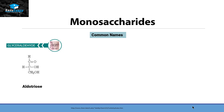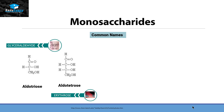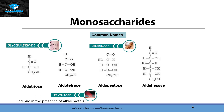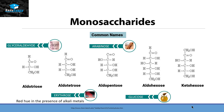Glyceraldehyde comes from the combination of glycerine with aldehyde. The second category, aldotetrose, is also called erythrose because it gives a red hue in the presence of alkali metals. Similarly, this aldopentose is called arabinose — a name related to its discovery, as it was first found in Arabic gum. This aldohexose is also called glucose, commonly present in honey and sweets. The last example is ketohexose, also called fructose, as it is usually present within fruits.